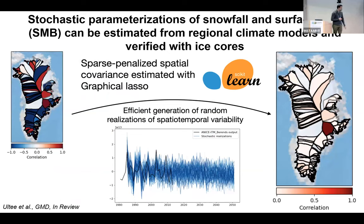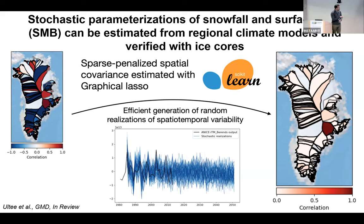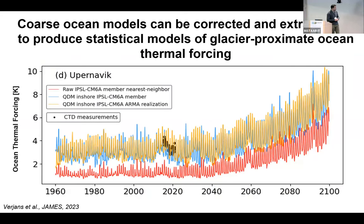Liz Ulty's work addresses surface mass balance. We have good regional validated climate models for high-resolution projections over ice sheets, but you can't easily run them hundreds or thousands of times to produce different variability realizations. Using sparse penalized methods, Liz captured the spatial and temporal variability of snowfall and surface melt on the Greenland Ice Sheet and developed a stochastic model for surface mass balance variability. This is available as a preprint in GMD.